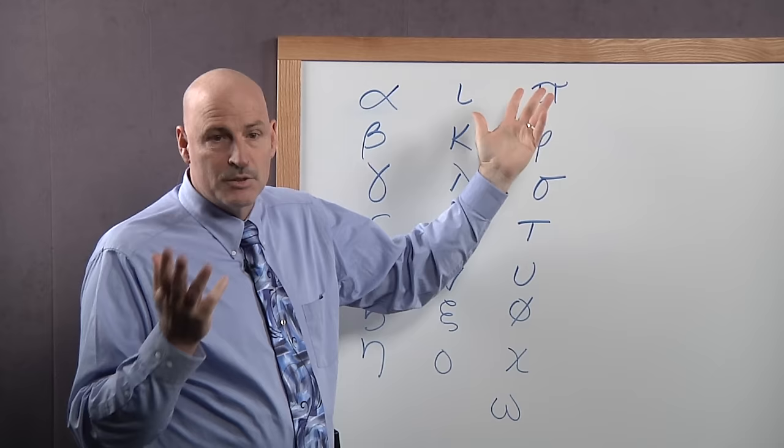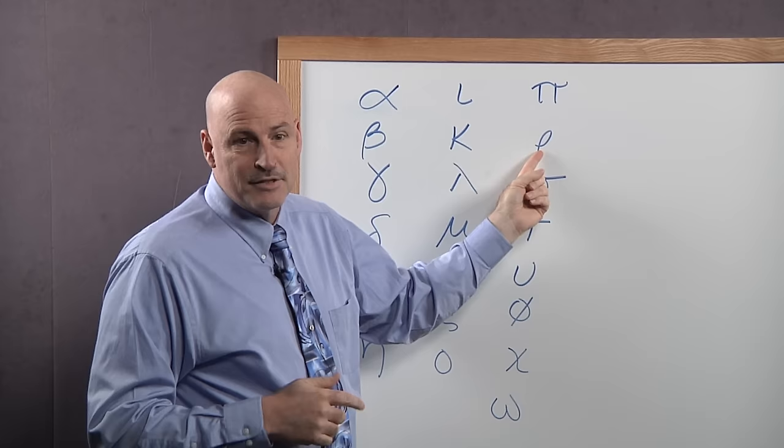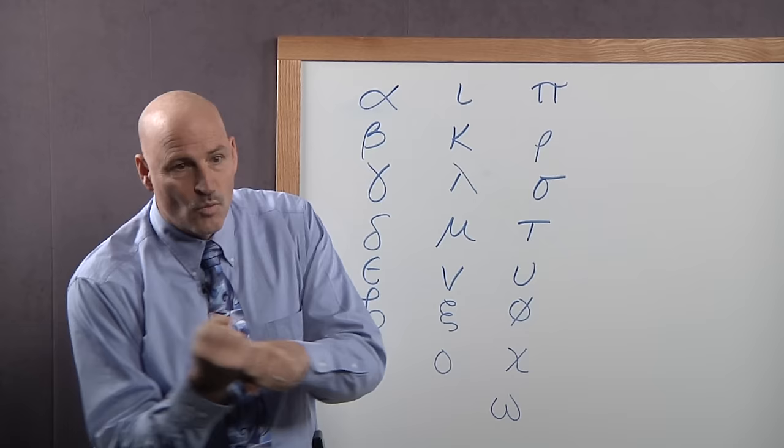Pete Rose, and that comes to our next letters, which is P, which we often say pi. This is where we get pi r squared. But P, rho. It looks like a P, but it's actually an r sound. P, rho. And that's Pete Rose.